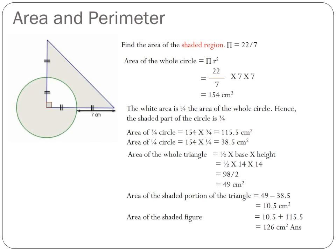We are going to find the area of the shaded region, taking pi to be 22 over 7.